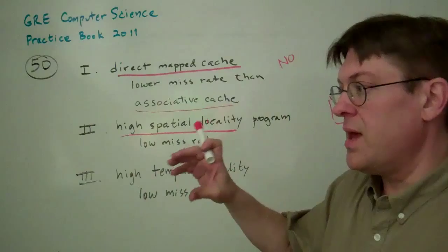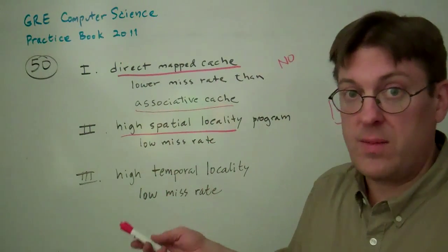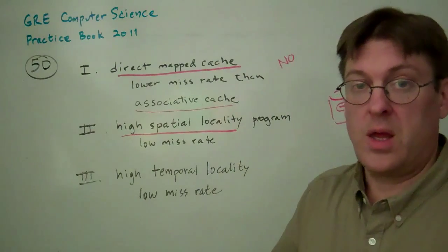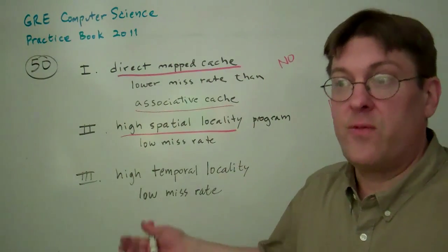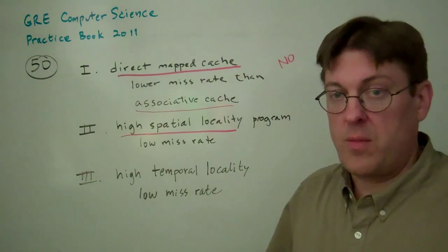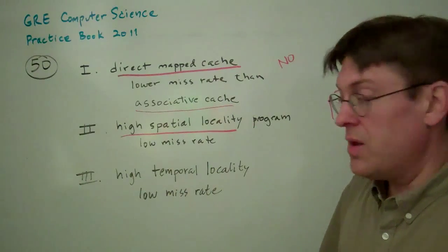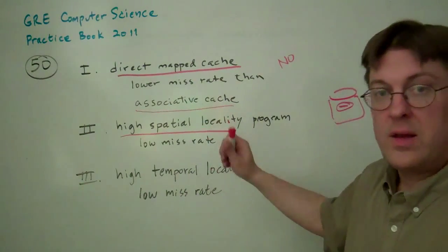It doesn't keep track of where physically the data came from, right? The cache doesn't care where it came from. It's going to care how recently you used it. So spatial locality, not important.